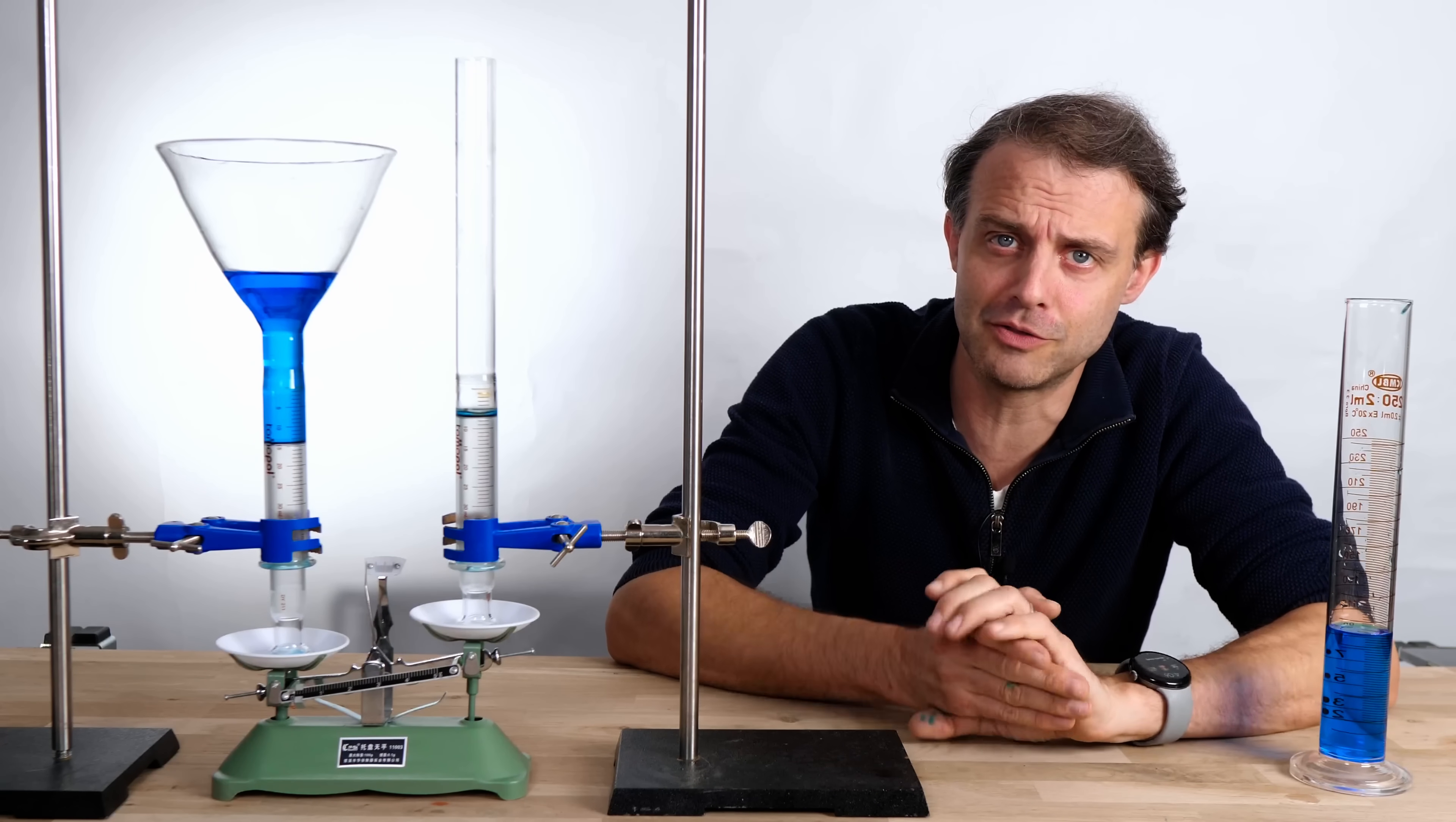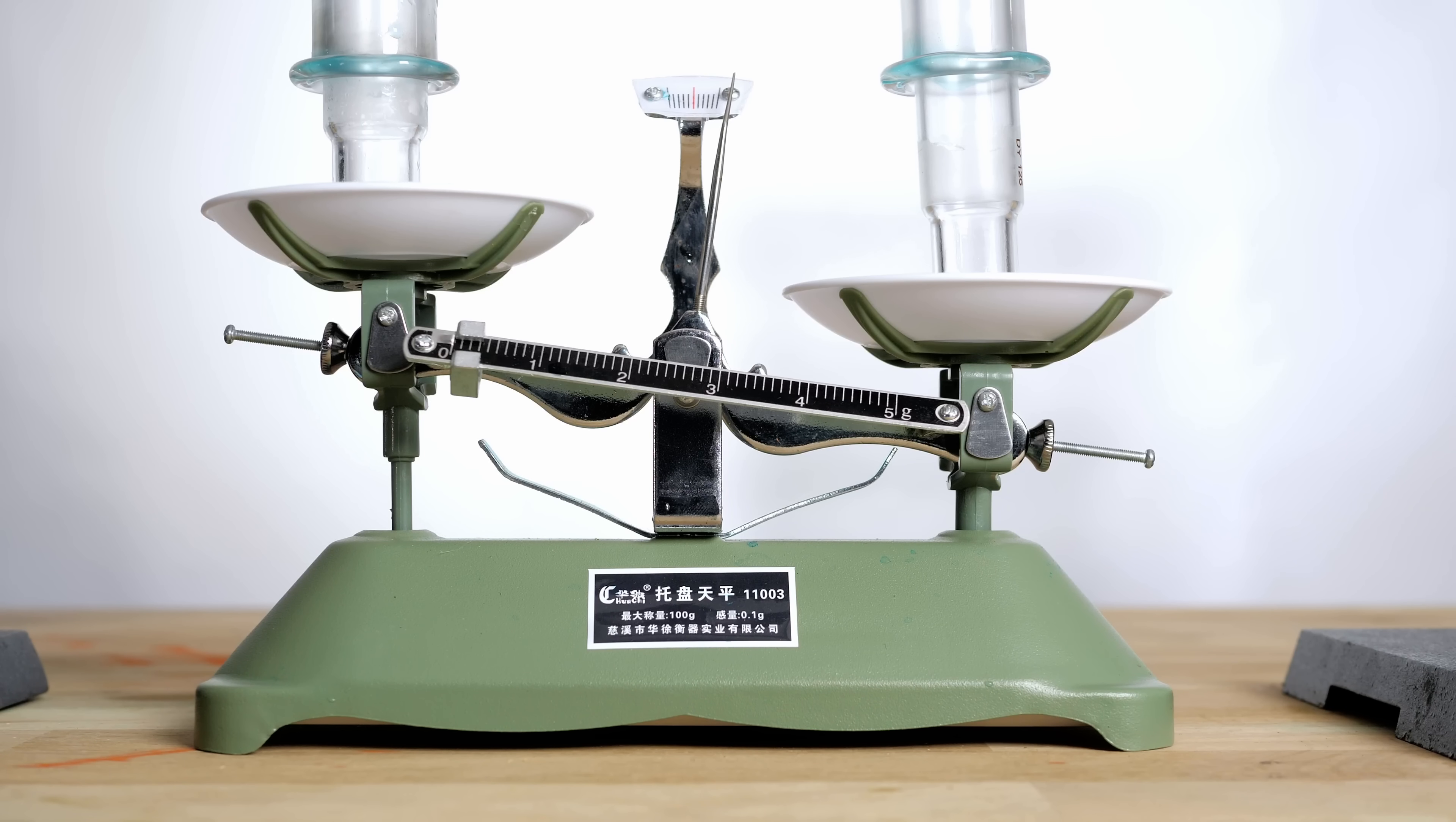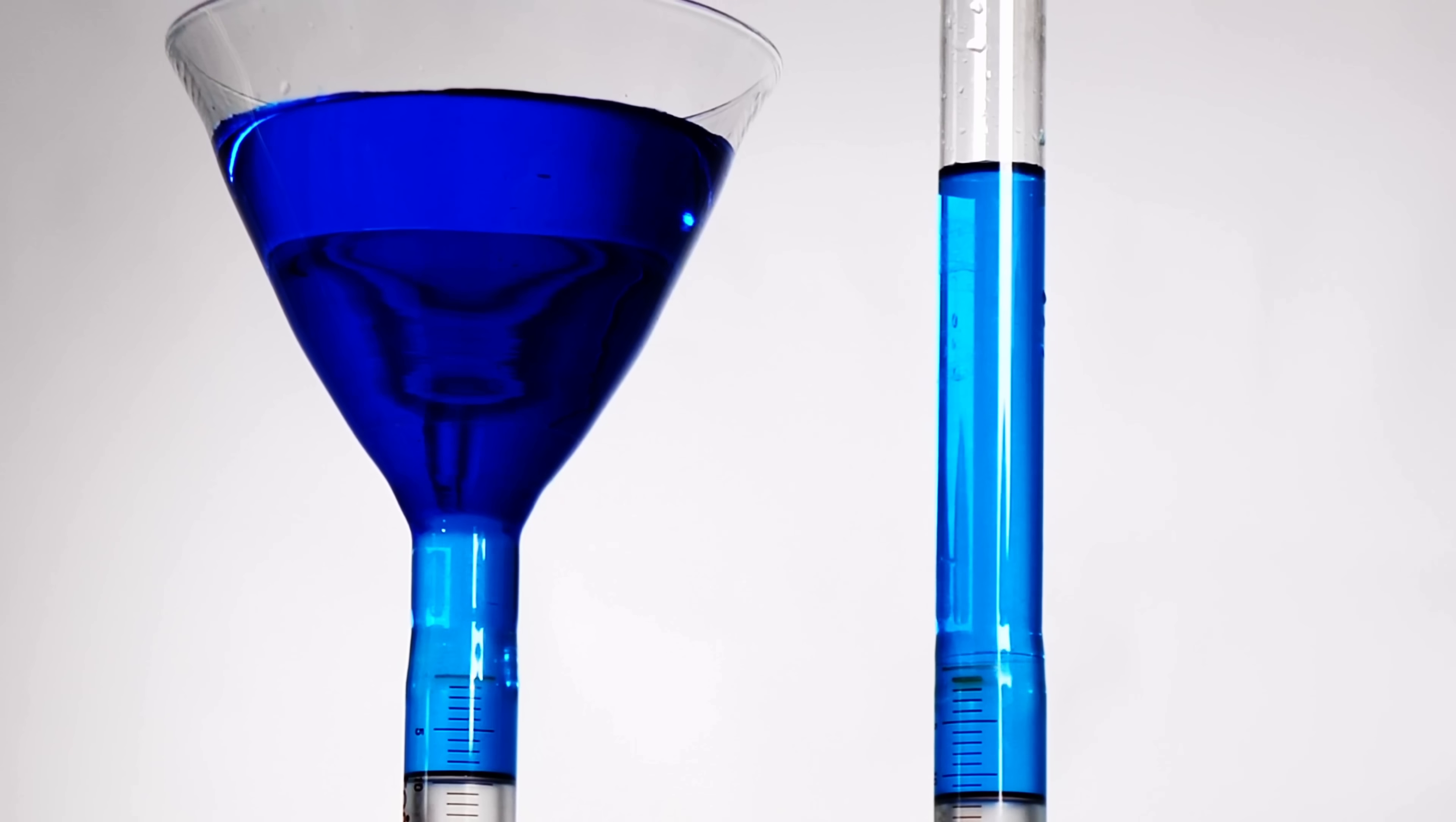Before you make a guess, I'll quickly run you through the setup. Both containers have a freely moving piston at the bottom. The water in the container pushes down on the piston, and the piston pushes down on the scales. The two containers are being held by clamp stands, so we're only weighing the water inside.